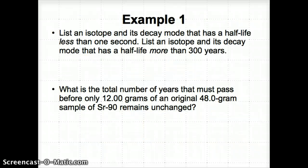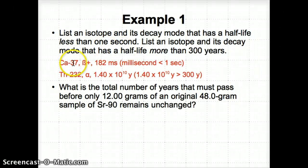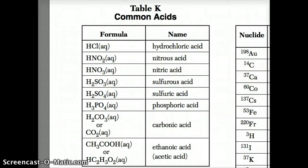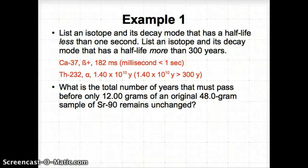Let's try two example problems. This first example asks: first, list an isotope and its decay mode that has a half-life less than one second. The second part asks: list an isotope and its decay mode that has a half-life more than 300 years. So if we look on Table N, we'll find the following — let me actually show you that. Looking at Table N, let's look for something with a decay mode and a half-life less than one second, and also find an isotope with a half-life more than 300 years.